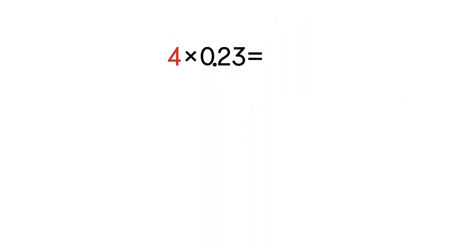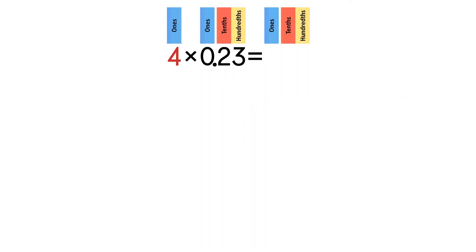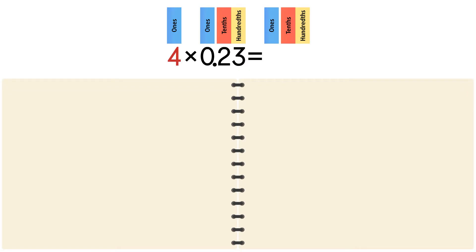Let's do another example: four times 23 hundredths. This time we're going to model using bars and circles. Let's draw 23 hundredths — each bar represents one tenth and each circle represents one hundredth. We have two tenths and three hundredths. Because we're multiplying by four, we have to draw this four times.